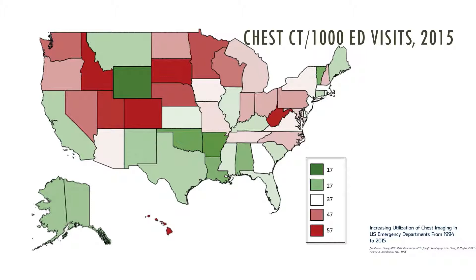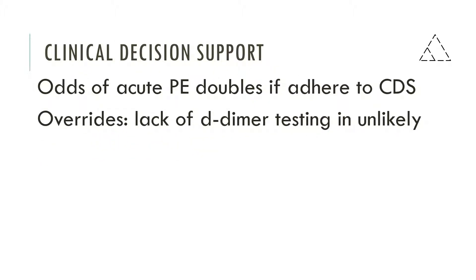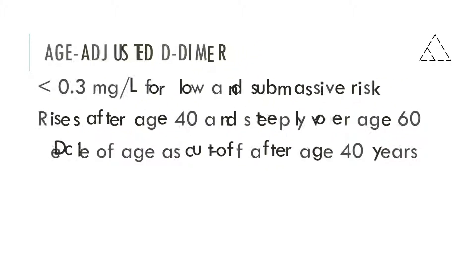In cases where we're suspecting acute pulmonary embolism, a Q scan or a half-dose Q scan is still a reasonable thing to do. For risk stratification, we use the PERC or the Wells criteria to determine whether there is a high probability pre-test for pulmonary embolism. And in select cases, we can use clinical decision support to determine whether or not we should do Q imaging.